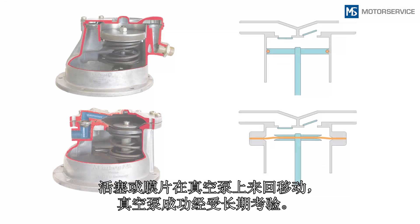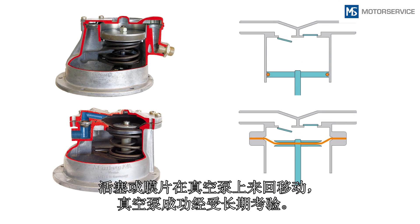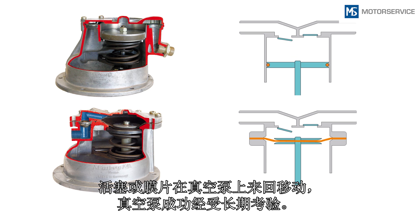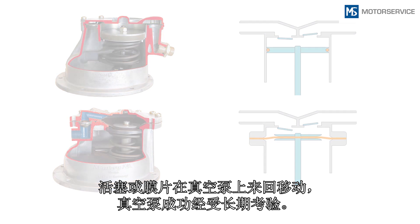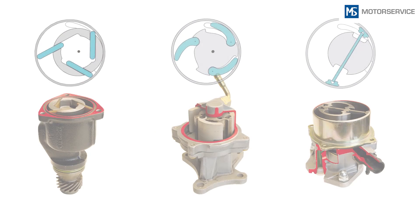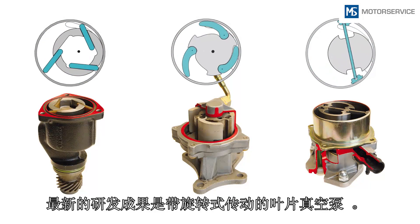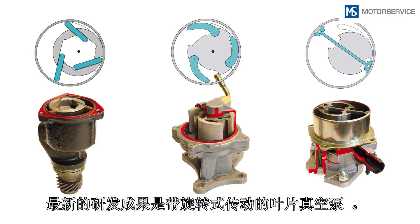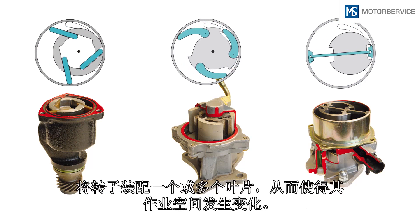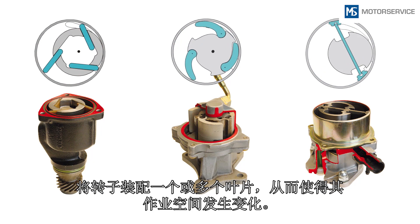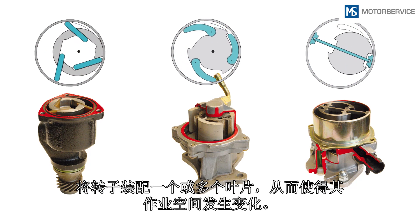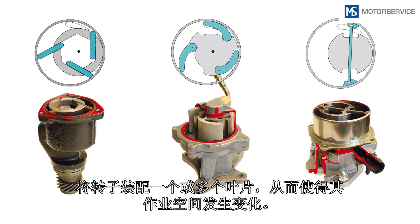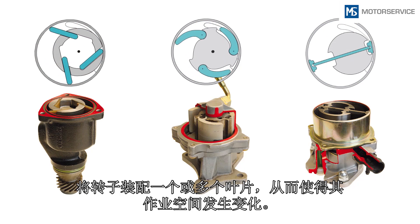Vacuum pumps that move a piston or diaphragm back and forth have long proven their worth in the field. A more recent development is vane vacuum pumps with rotary drive. Here, a rotor with one or more vanes forms compartments, the size of which varies during the work cycle.